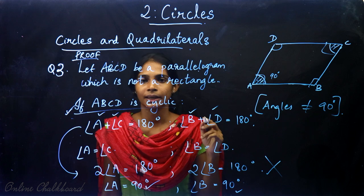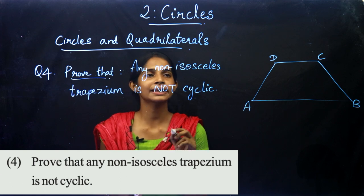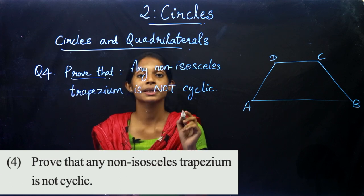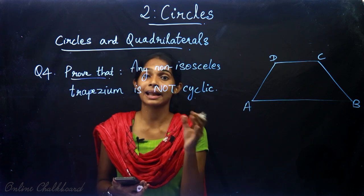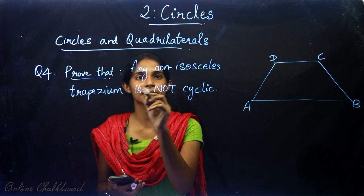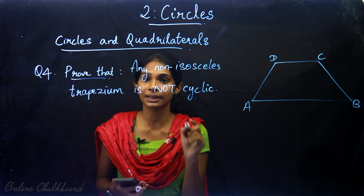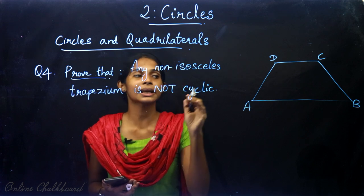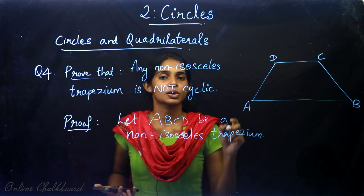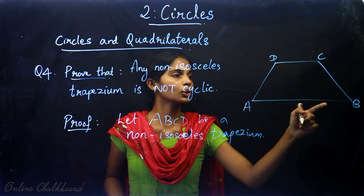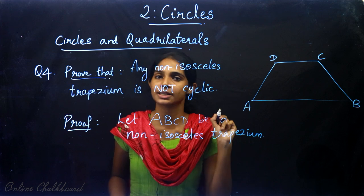Now let's go to question number 4. Prove that any non-isosceles trapezium is not cyclic. Let ABCD be a non-isosceles trapezium. The non-parallel sides are not equal, that is AD will not be equal to BC.